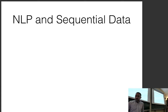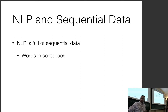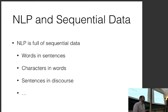For NLP, one of the things we want to handle is sequential data. Sequential data includes words in sentences, characters in words or sentences, sentences in a discourse, and so on. We have lots of examples in NLP where we have smaller parts in a sequence and want to compose them into larger parts.